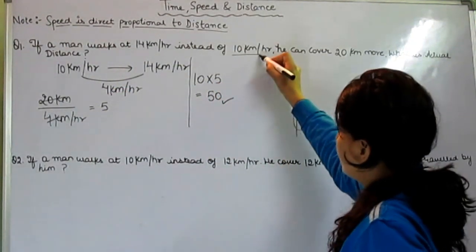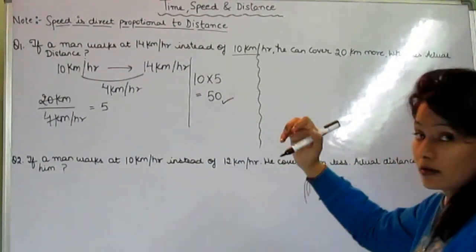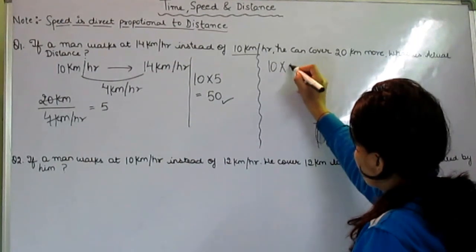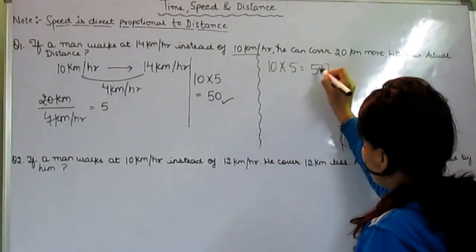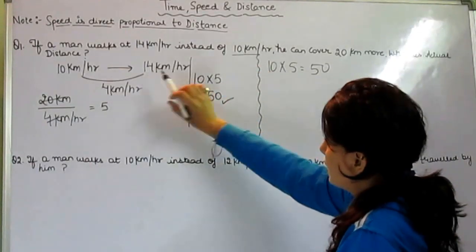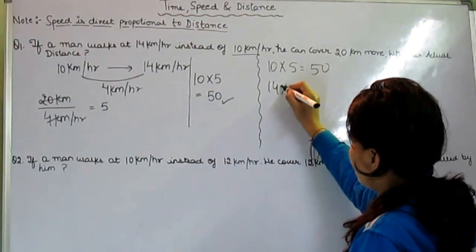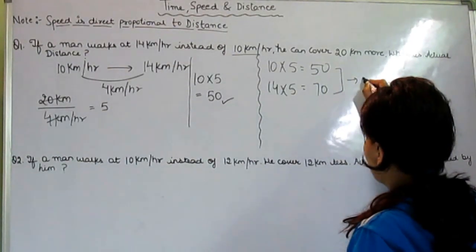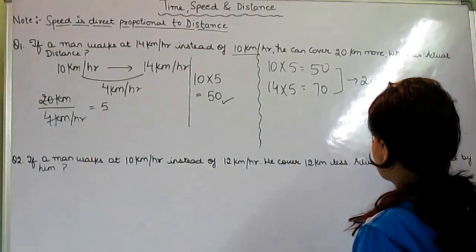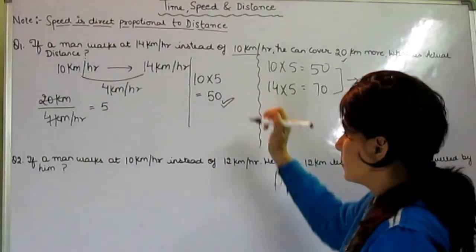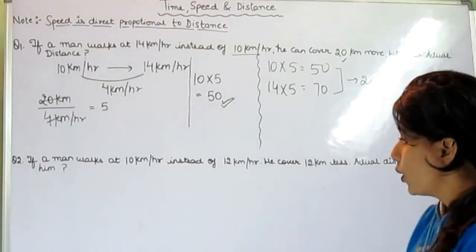Let's check whether our answer is right or not. When he goes with the speed of 10, he covers 50. When he is going with the speed of 14, he covers 70. What is the gap? 20 km and this is given to us. So our answer is absolutely right. 50 is the right answer.